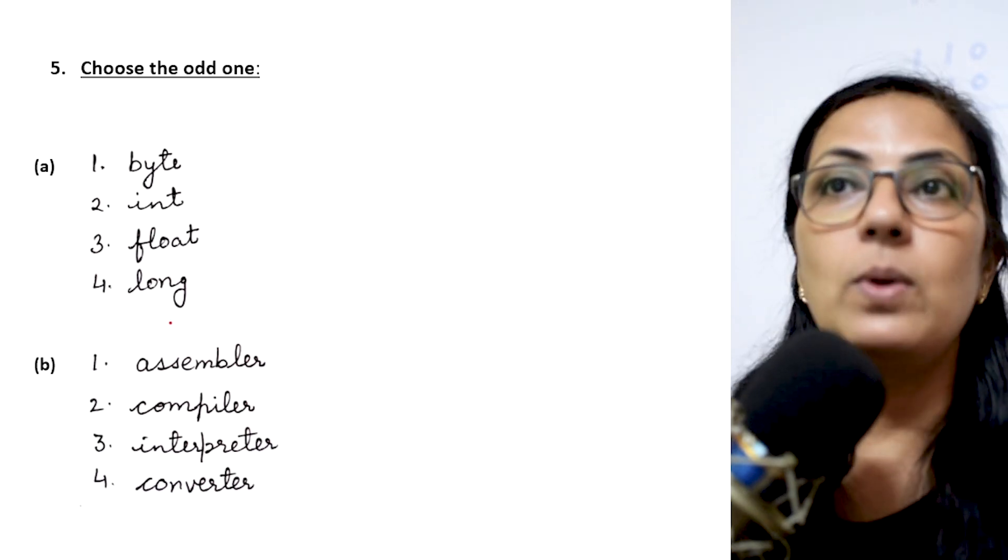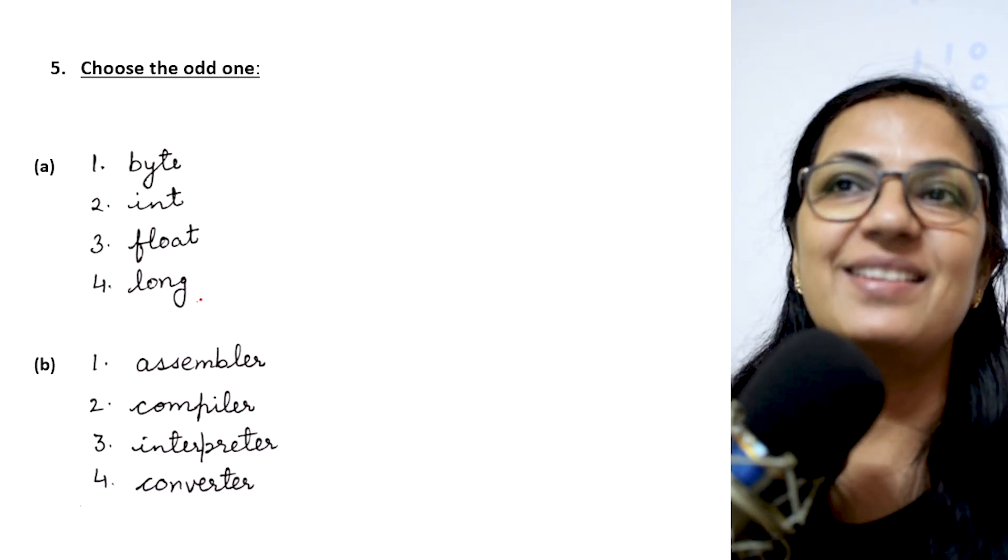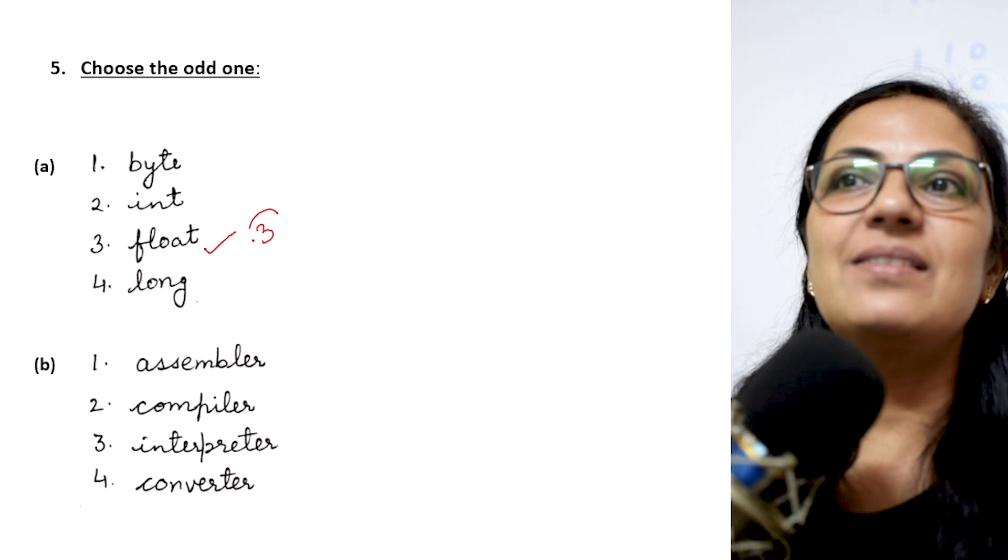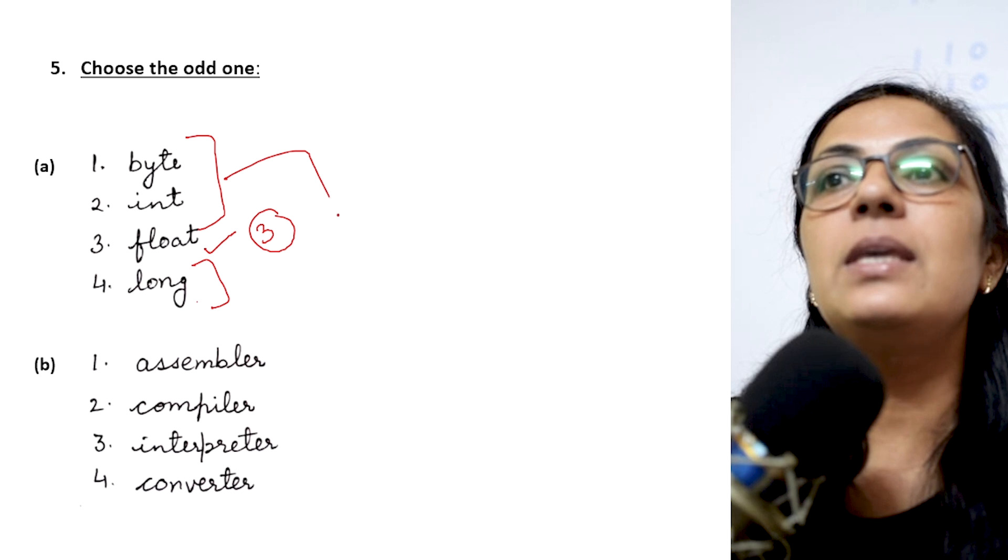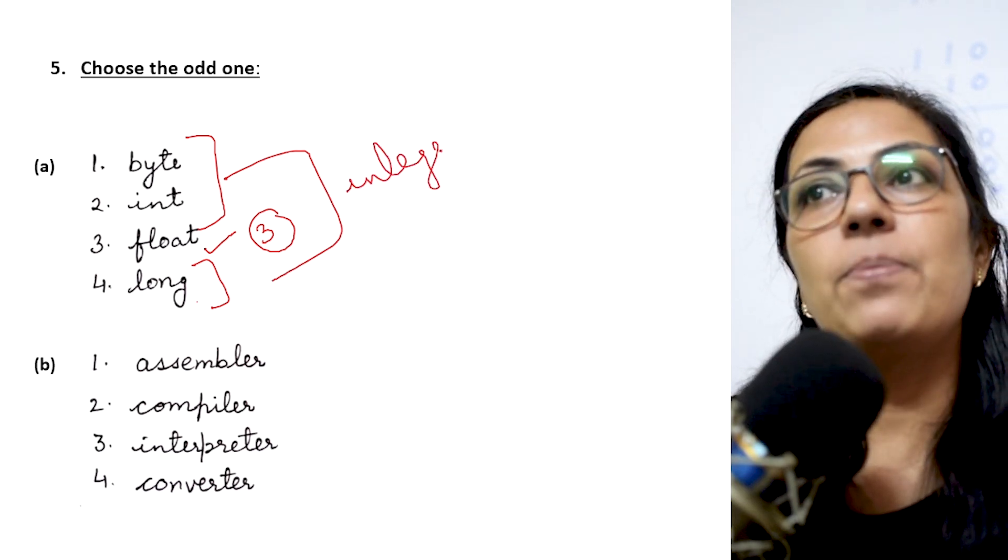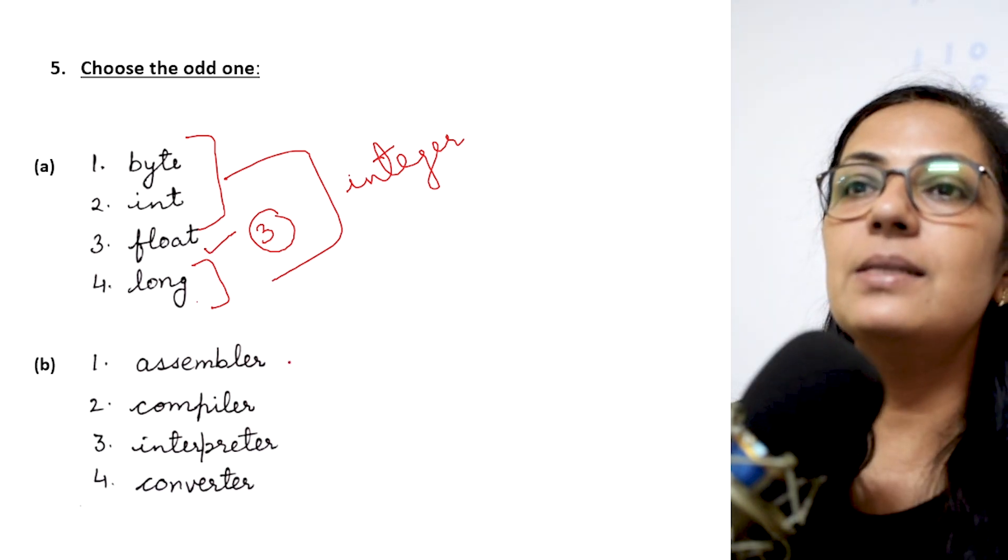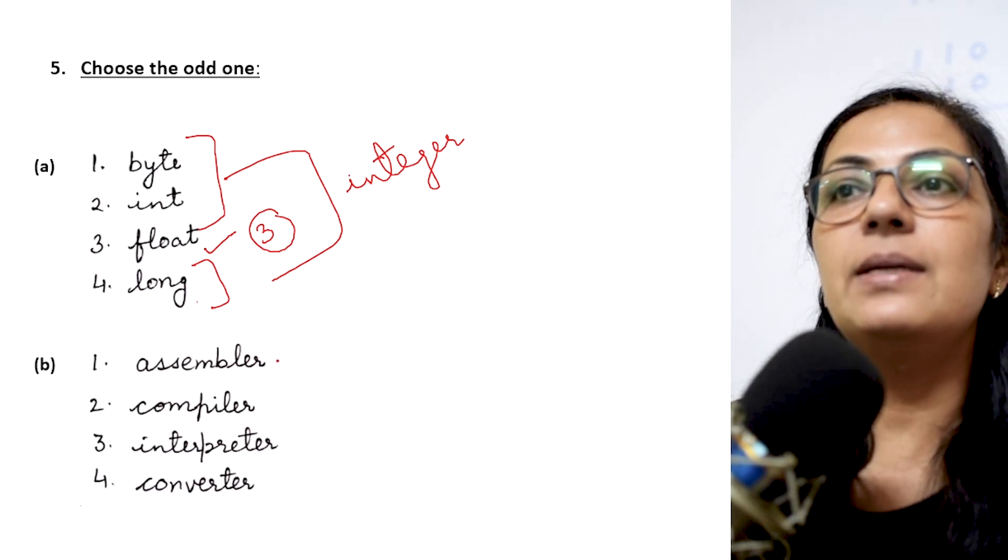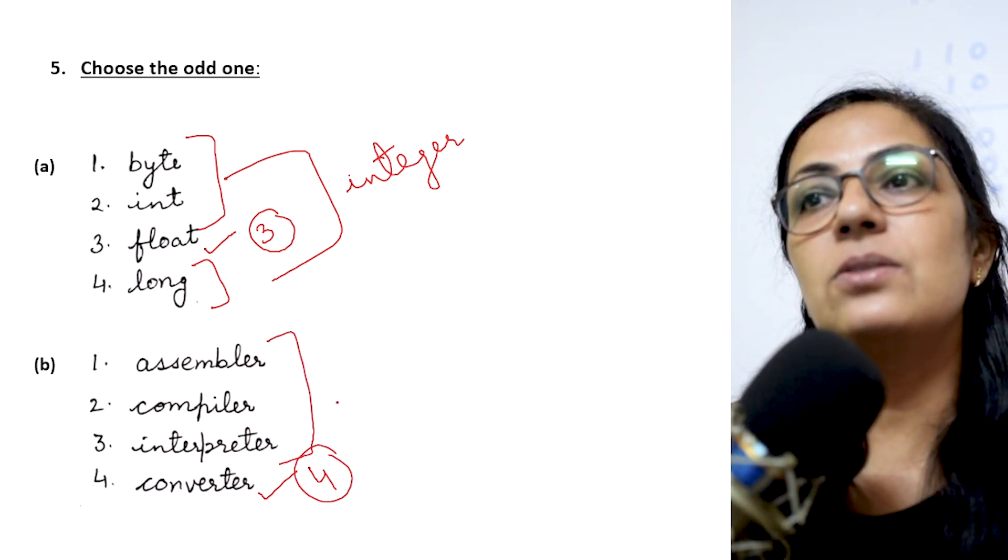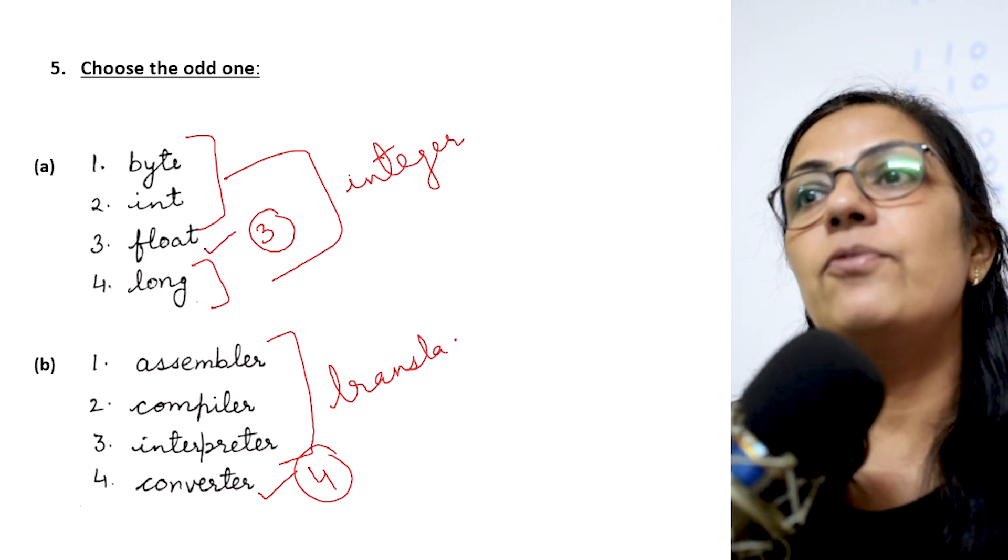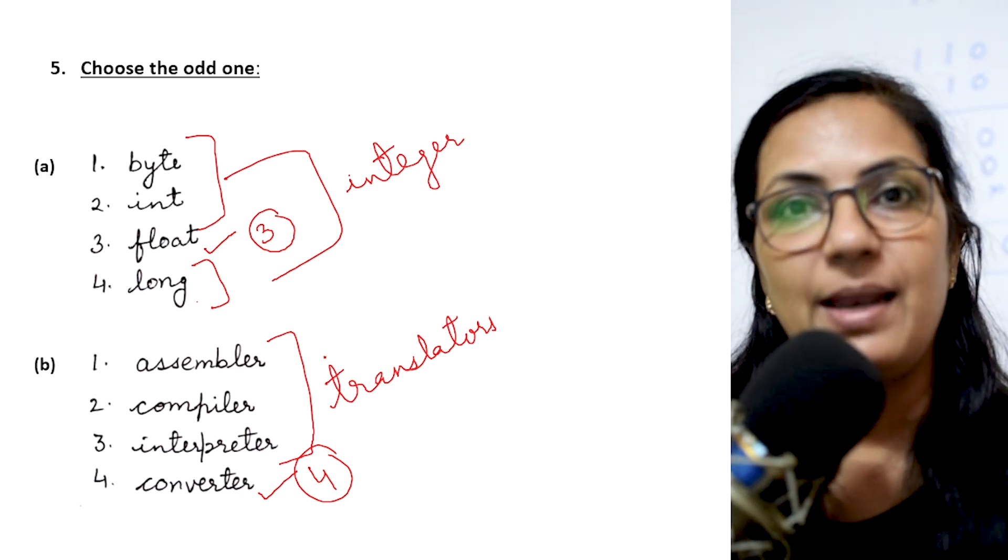Next choose the odd one. Byte, int, float, long. Yes children which is the correct option? Float is the correct option, option 3. Why? Because byte, int and long all these are integer type data types. And float is fractional type. The next is assembler, compiler, interpreter and converter. Here option 4 is the correct answer because these three are translators which are used to convert one language into another computer language.